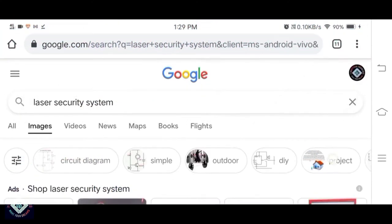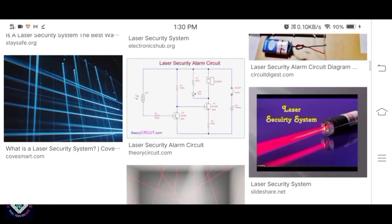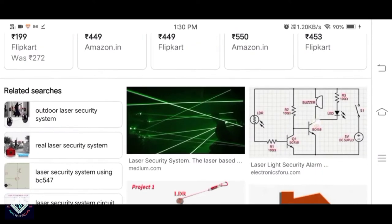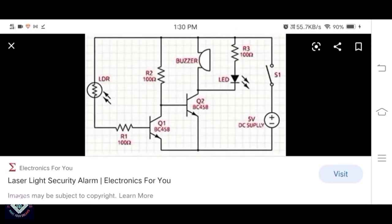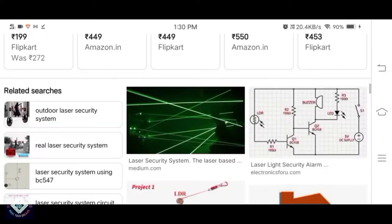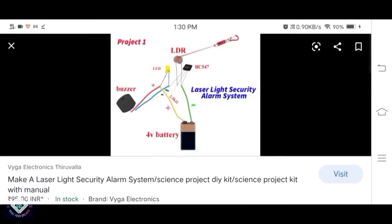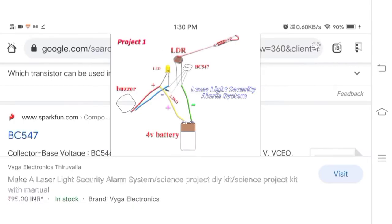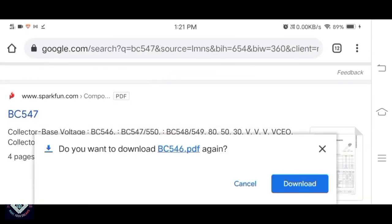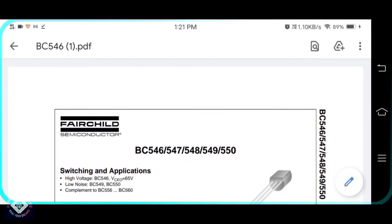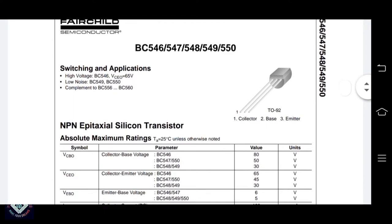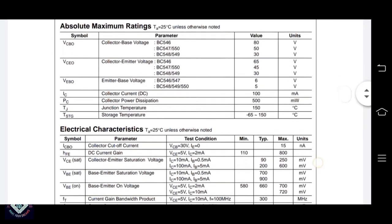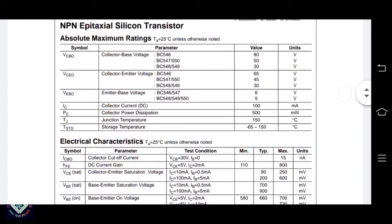So I thought why not make one. After searching the web I got this circuit, but it uses two transistors. I thought one will do, so I got this circuit. I didn't have BC547 lying around, so I downloaded the datasheet.